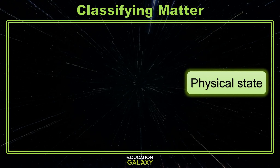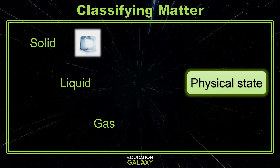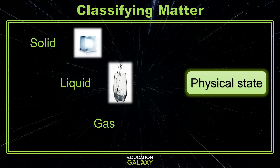Next, the physical states of matter refer to whether a material is a solid, liquid, or gas. The most common examples of these states are ice, which is a solid, water, which is a liquid, and steam or water vapor, which is a gas.